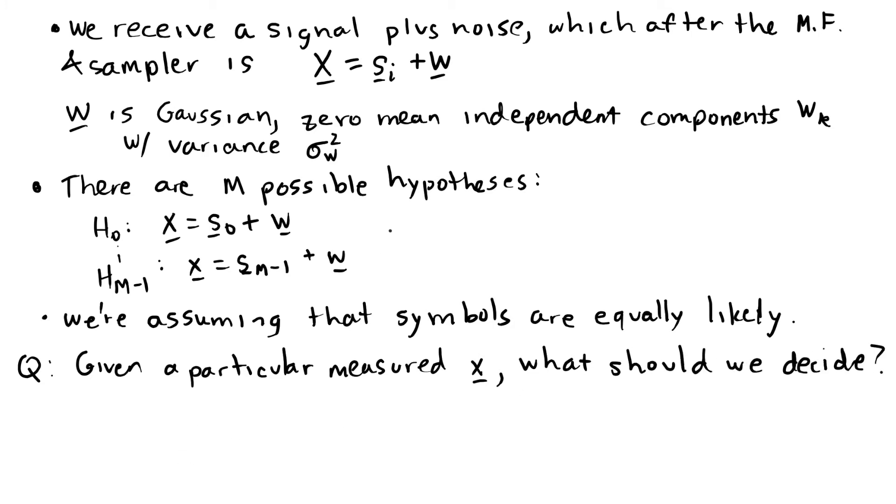To solve this, we have to think like we did when we solved the binary detection problem. We have to put a joint probability by each hypothesis, so this would be the conditional probability of x given H sub zero multiplied by the probability of H sub zero.